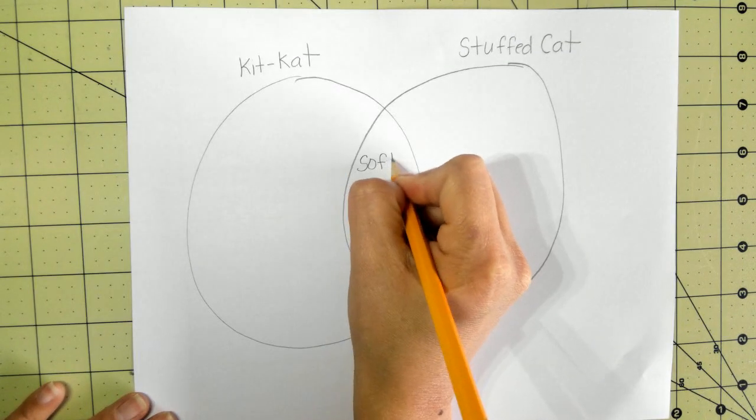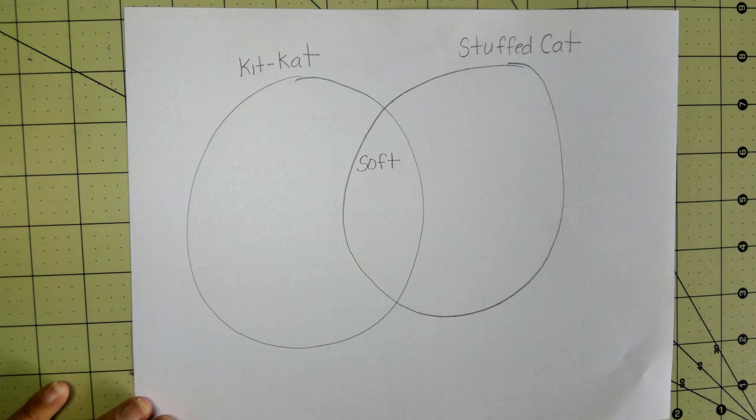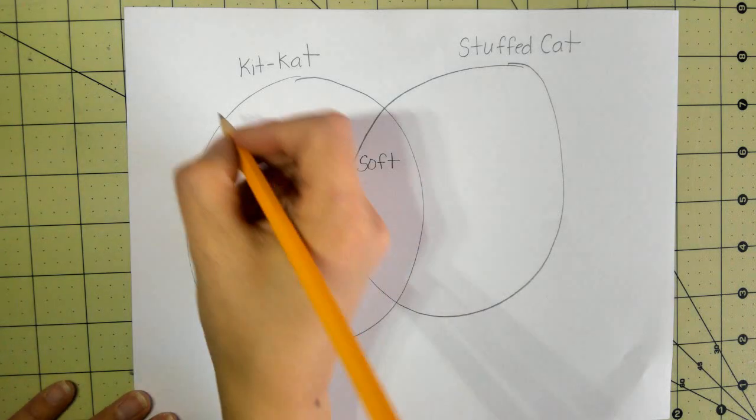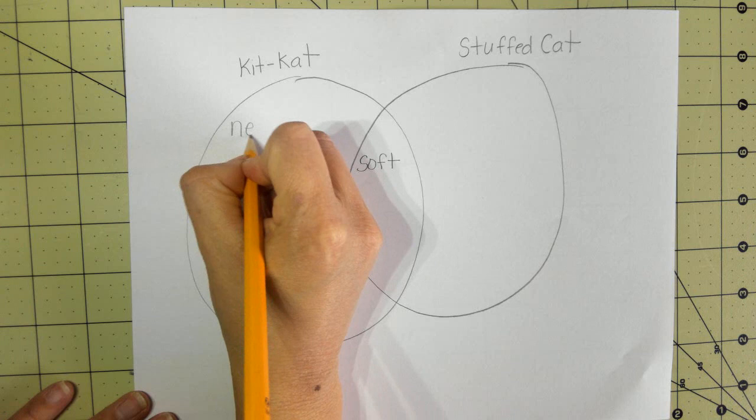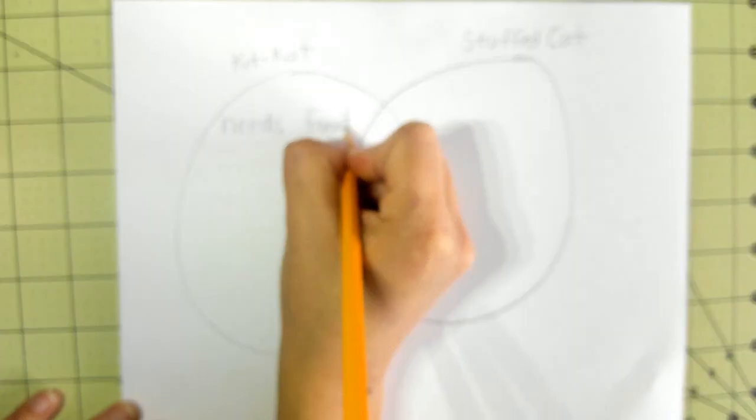And now how are they different? What was something that Kit Kat needs? Very good, Kit Kat needs food. So here I'm going to write needs food, and on the stuffed cat I'm going to write doesn't need food.